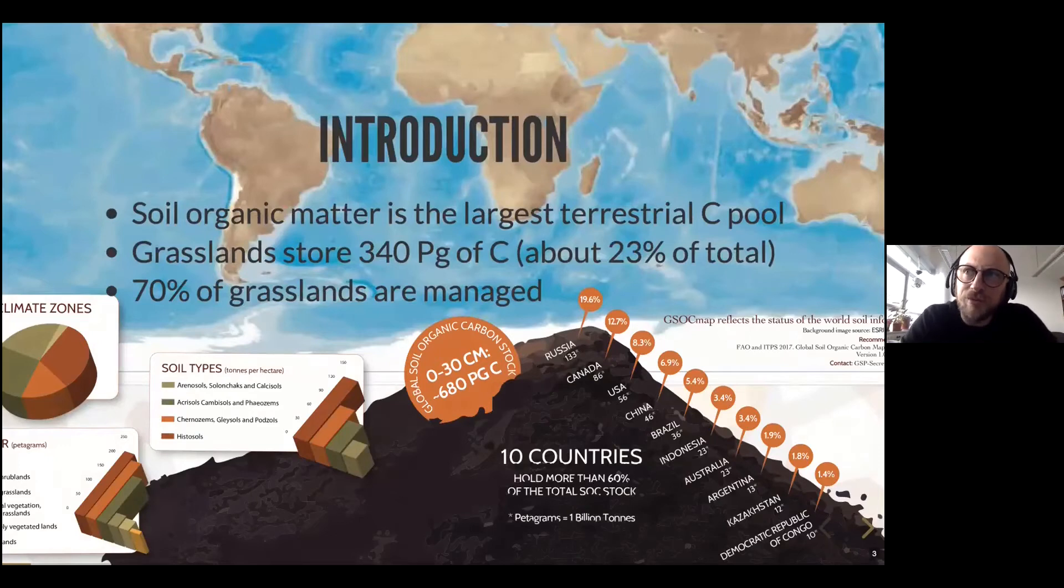Soils store the most carbon of any terrestrial carbon pool, and about a quarter of that is stored in grasslands, most of which are managed globally. This means there's a lot of stored carbon that's directly impacted by management decisions, both positively and negatively. Understanding how management affects global carbon stocks is a really important question to answer in the 21st century.